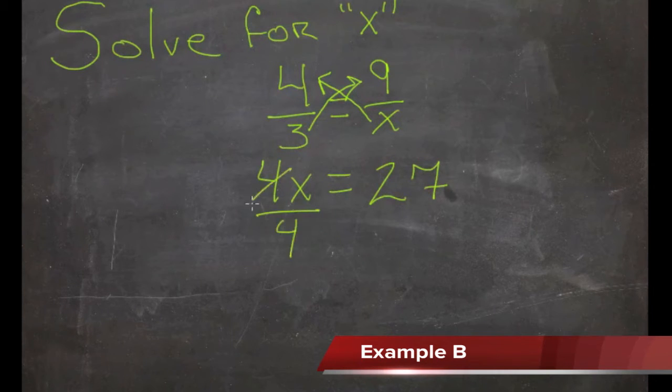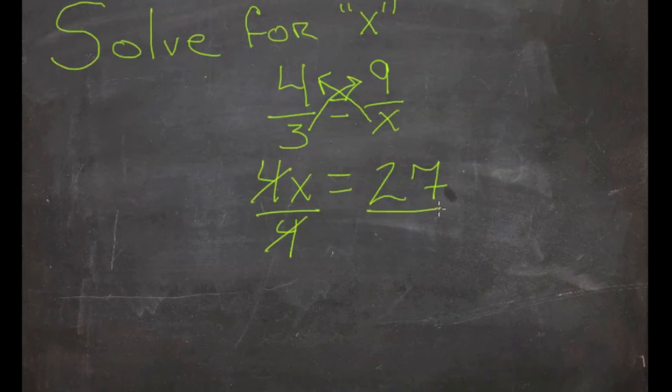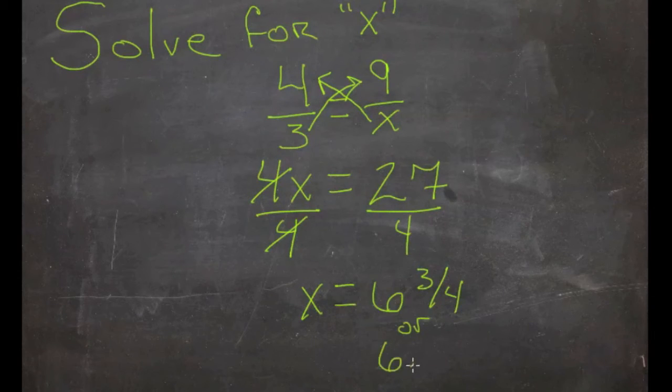Divide both sides by 4. So those 4s cancel. 27 over 4. So x equals 6 times 4 is 24. So that would give us 6 with 3 quarters left over, or 6.75 if you prefer the decimal.